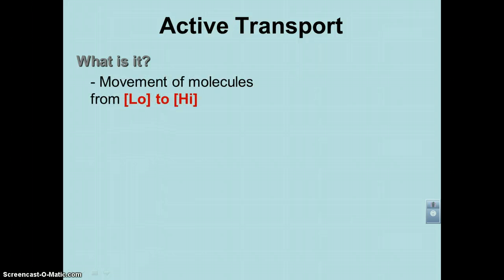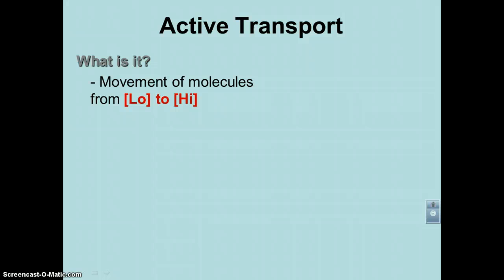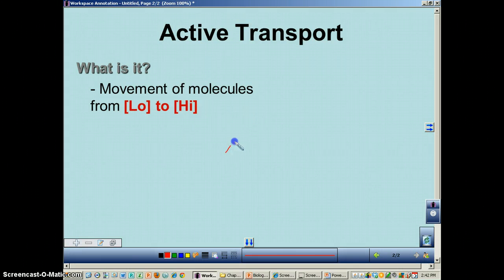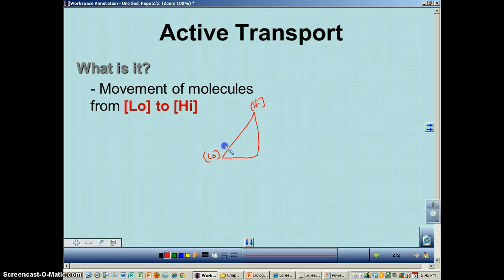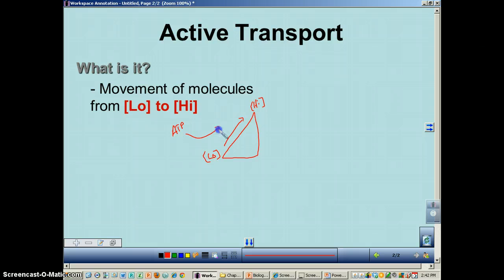What is active transport? It's really the movement of molecules from low to high concentration, which means you're going against the concentration gradient. We draw the concentration gradient as a triangle — down at the bottom we have low concentration, and the brackets from chemistry just means concentration. So as you can see, we have to go uphill, and when you do that, it's going to require energy. Just like all other cellular processes, the energy comes from ATP.